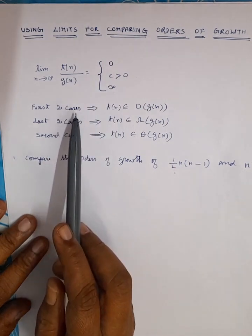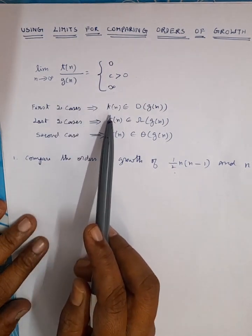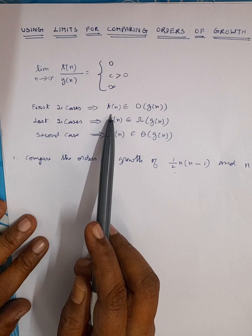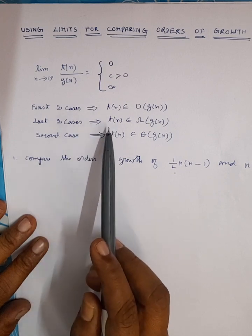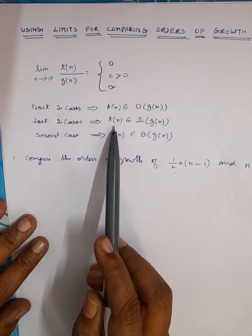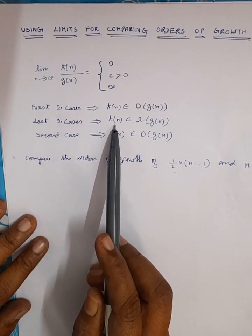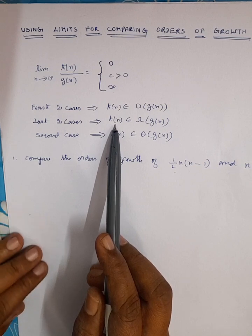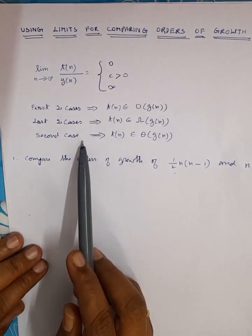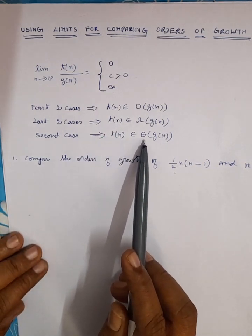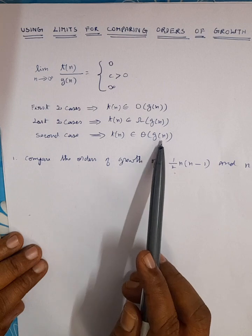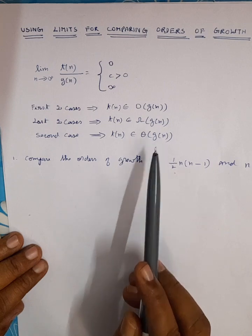The first two cases mean that t(n) is in Big O of g(n). The last two cases mean that t(n) is in Omega of g(n), and the second case specifically means that t(n) is in Theta of g(n).